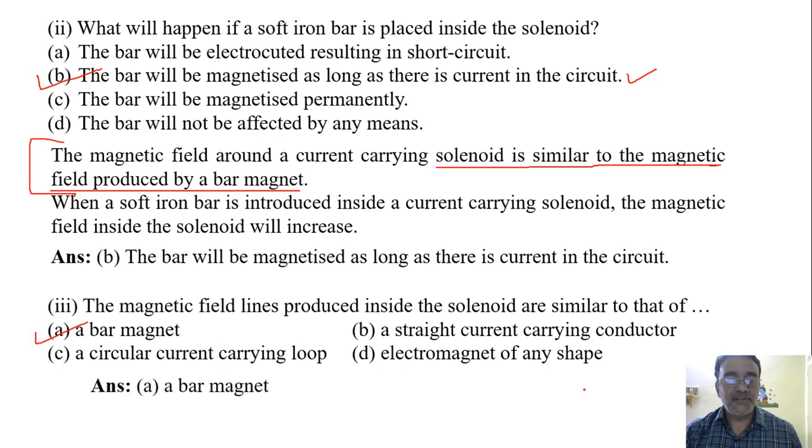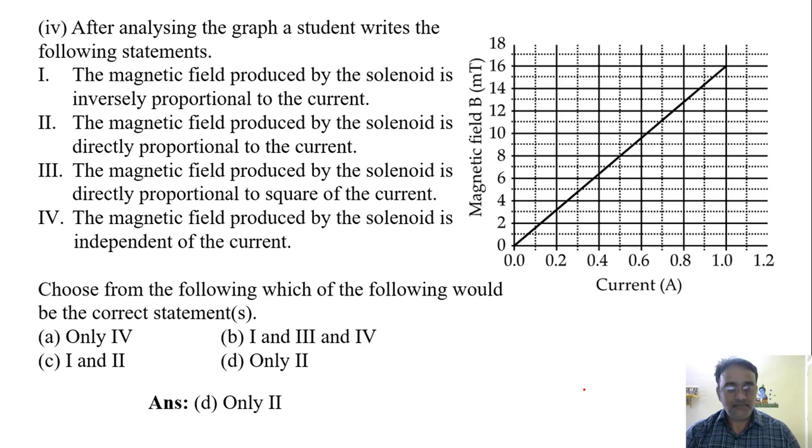So now we will move towards the fourth question. After analyzing the graph, students write the following statements. The magnetic field produced by the solenoid is inversely proportional to the current. If it is inversely proportional, then it will get like this. The magnetic field produced by the solenoid is directly proportional to the current.